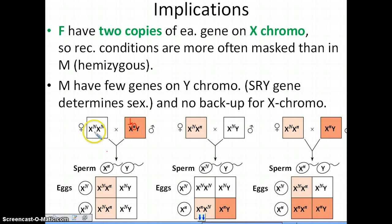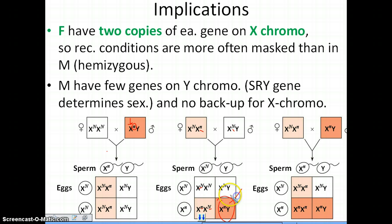If a male has the condition but mates with a female that is homozygous dominant, none of the kids will end up having the condition, even though some females will be carriers. If the father doesn't have the condition but the mother is a carrier, none of the daughters will have it but half the sons will, because all daughters will receive a dominant allele from the father even if the mother passes a recessive allele to a daughter. Males are significantly more likely to inherit X-linked recessive conditions simply because they don't have that backup X chromosome.